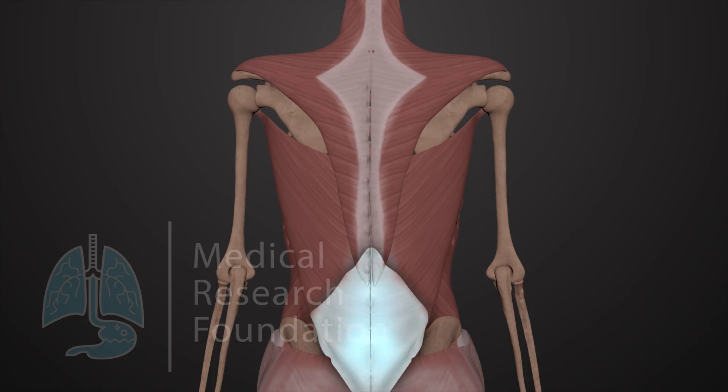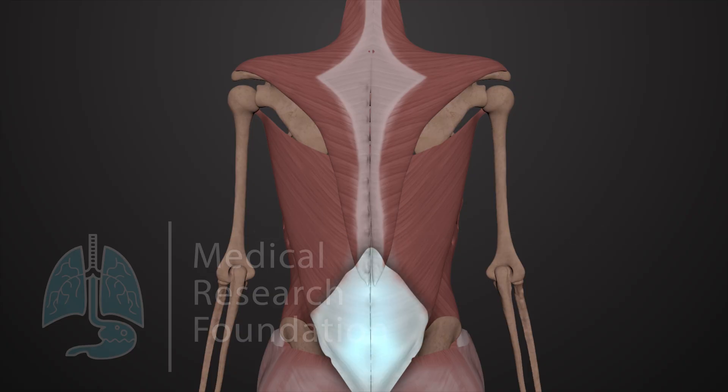In the lumbar region, the thoracolumbar fascia is very strong and should be called lumbar fascia.